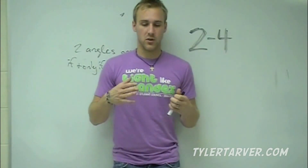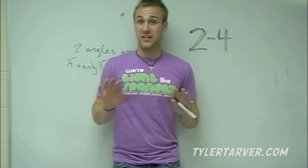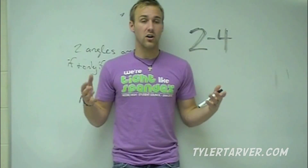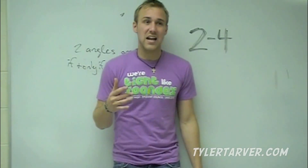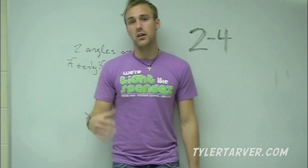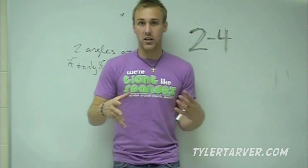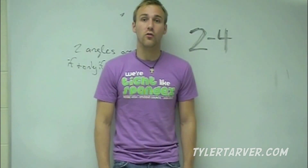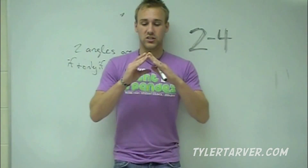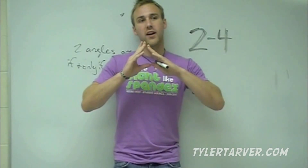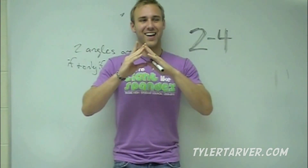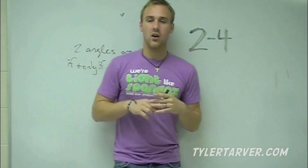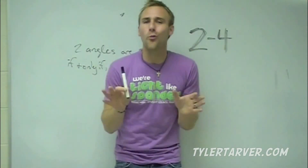A polygon is any closed shape with straight sides that has three or more sides. Three, four, five, six, seven, eight, nine, a hundred — all polygons. The two you're learning today: first, a triangle, which you've probably heard of. A triangle has three sides — like a tricycle has three wheels. All interior angles of a triangle add up to 180 degrees.